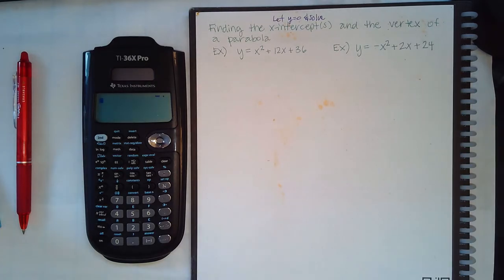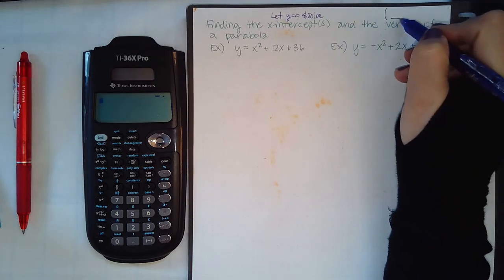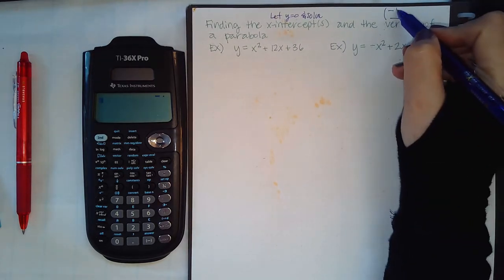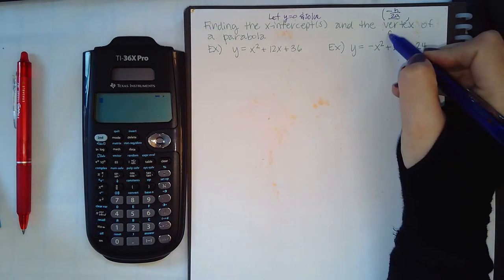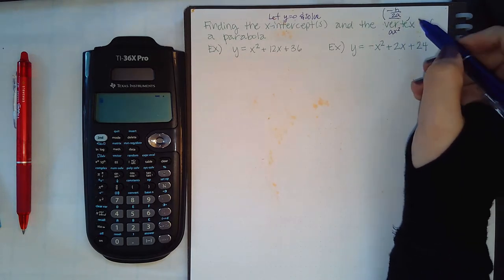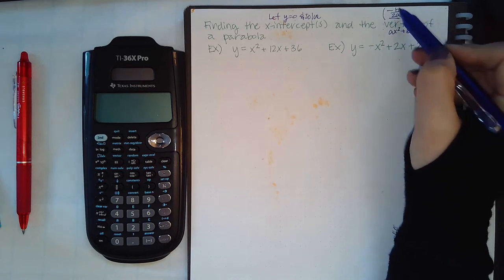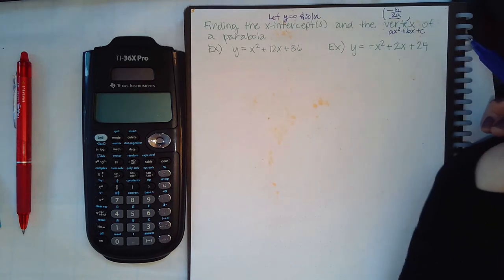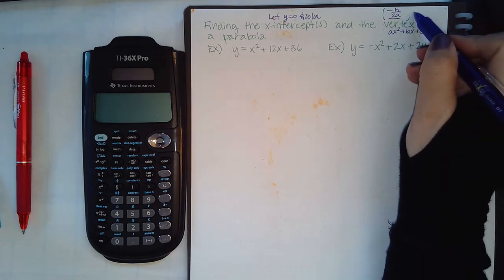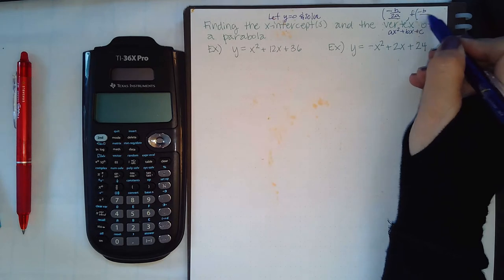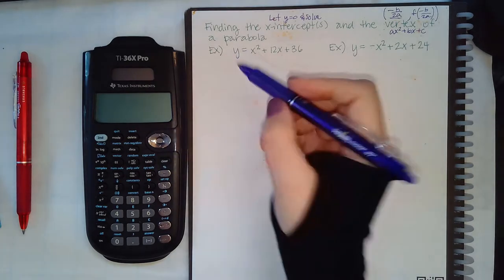For the vertex, there is a formula. You first find the x-value of the vertex using negative b over 2a, granted that your parabola is written in standard form. To find the y-coordinate of the vertex, you then plug that x-value into your function or equation.